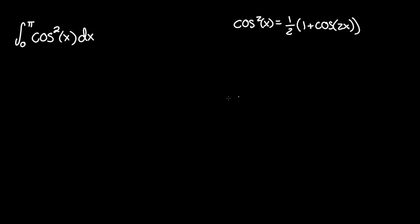With this identity we're actually able to integrate this function, so that becomes the integral between zero and pi of one half times one plus cosine two x dx. This one half we can treat as a constant and move in front of the integral sign, and now we're able to integrate.